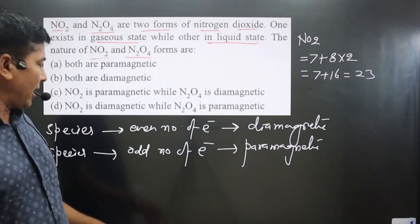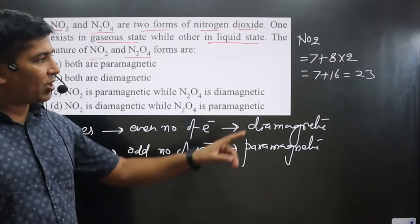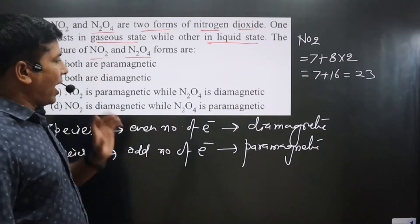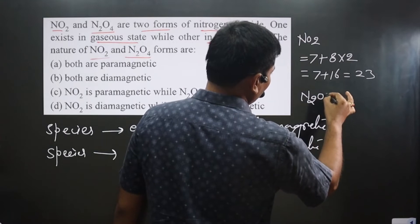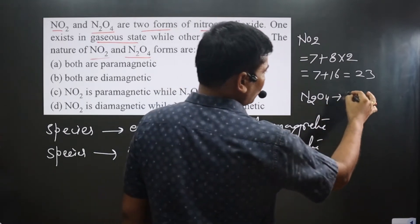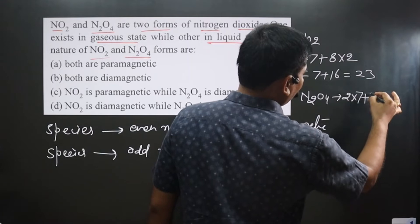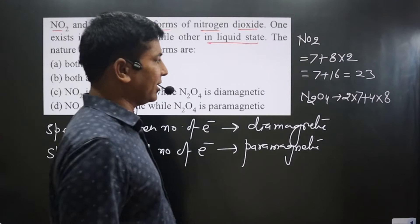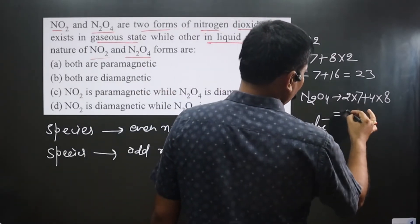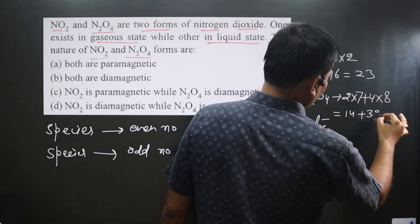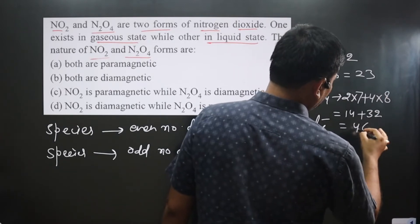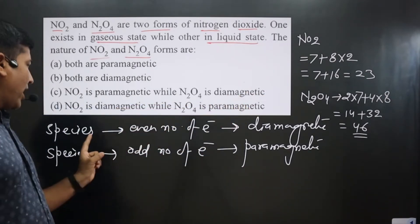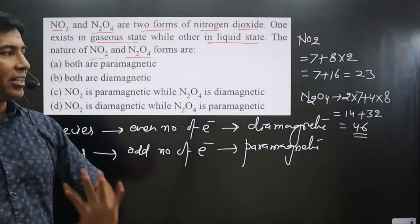Since NO₂ has an unpaired electron, it will be paramagnetic by nature. Now for N₂O₄: there are 2 nitrogens, each with atomic number 7, giving 14, and 4 oxygens each with atomic number 8, giving 32. Total: 14 plus 32 equals 46. That is an even number, so N₂O₄ having an even number of electrons will be diamagnetic by nature.